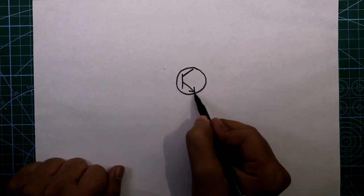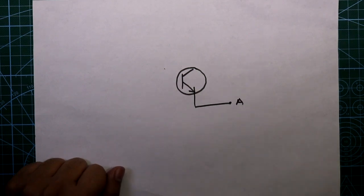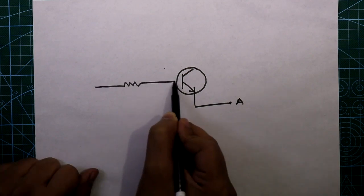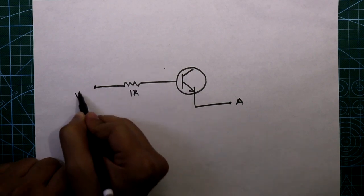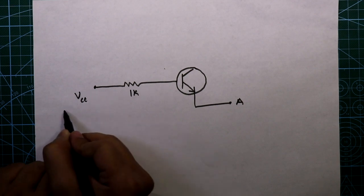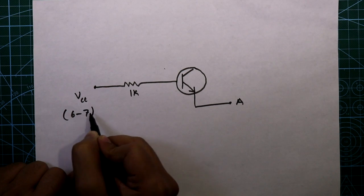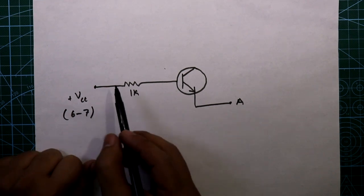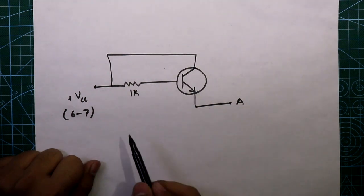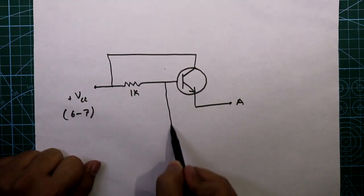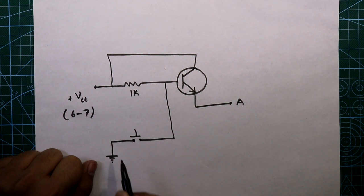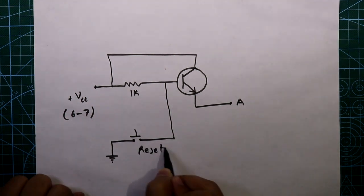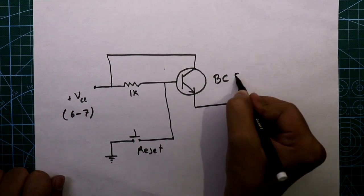Now see the other part of the circuit. We need a transistor, and its emitter is our point A — this is the point A I was talking about. Connect one 1 kilo ohm resistor to the base of the transistor, and connect VCC here — you can use 6 to 7 volts. This VCC is also connected to the collector of the transistor. We also need a push-to-on switch connected to ground — this will be our reset switch. The transistor is BC548.